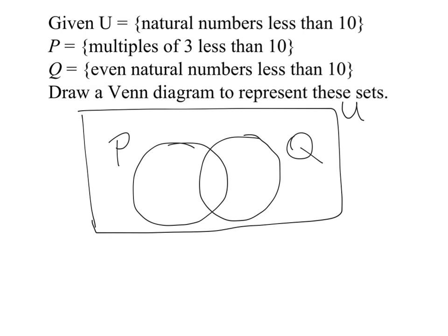Now, we need to look at what the universe and P and Q are actually represented by in this question. So one tip that I would say for this is, down below, let's just write down what U, P, and Q actually represent. So the universe, the universal set, is the natural numbers less than 10.